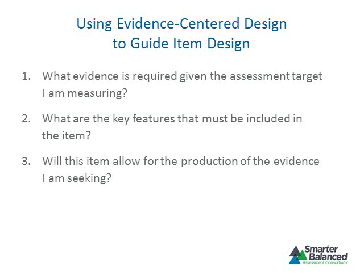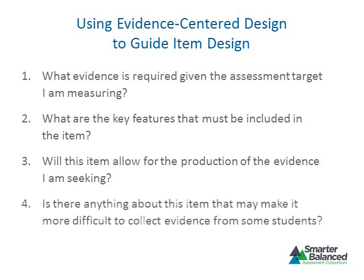Once an item is developed, it is important to revisit whether the resulting item is likely to produce the evidence being elicited. This is done by reviewing the task model and comparing the key features with the item of interest. If the item is not likely to produce the evidence of interest, then the item is in need of revision. Finally, once it is determined that the item is well suited for eliciting the evidence sought, it is important to ask whether there are any features of the item — like the name of a person, an object, or a situation — that may be unfamiliar to some students or may otherwise make it difficult to collect accurate evidence. For example, if an essay question asks students to describe what they did during a snow day, any student who has not experienced a snow day may have difficulty answering, making it difficult to collect evidence about his or her ability to write. Any features of an item that may be unfamiliar to some students can create bias and are in need of further revision. If the item is bias-free, it is ready to be shared with others.